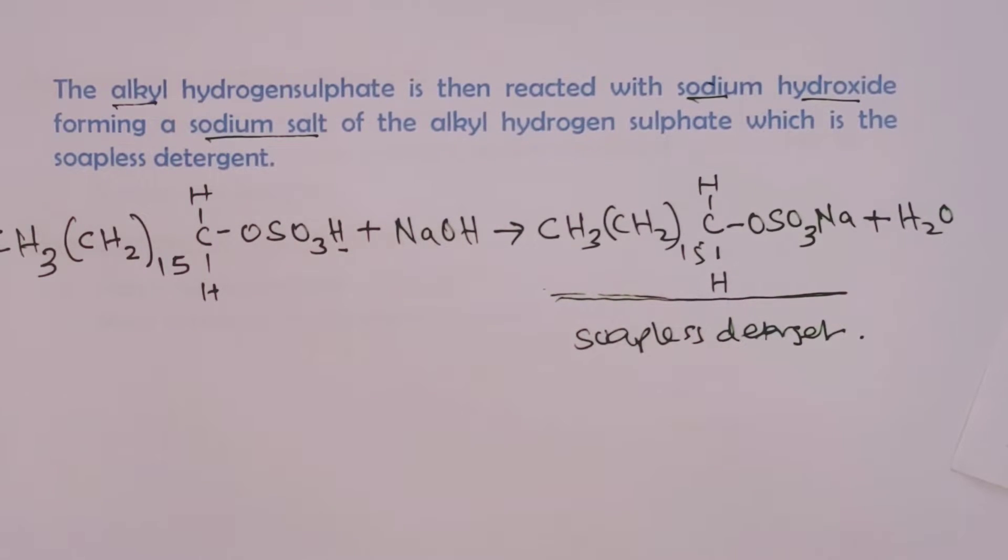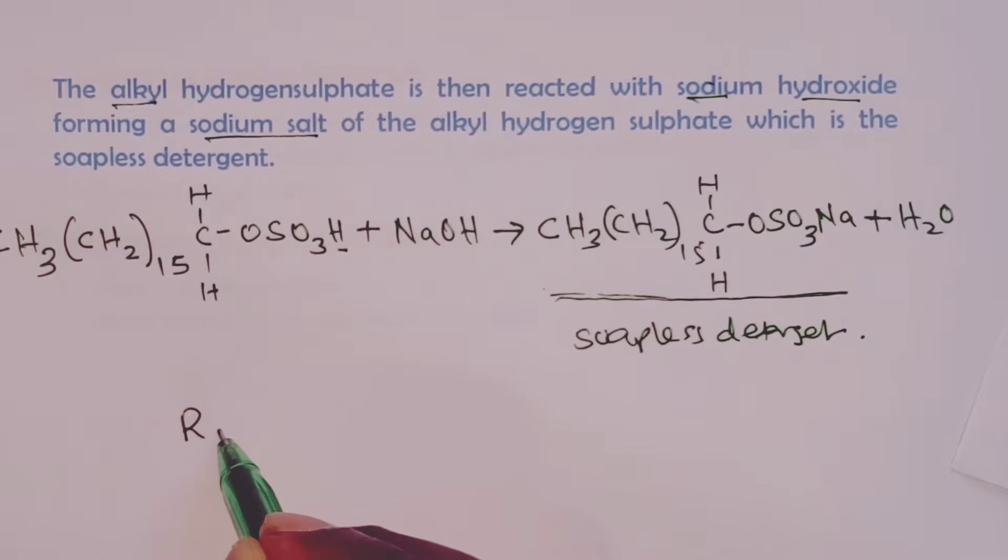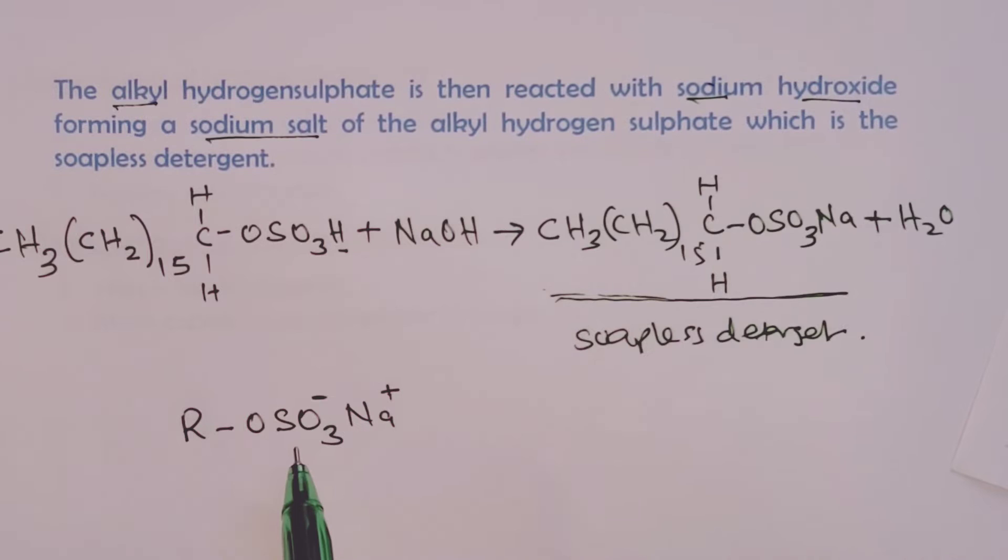Now, this soapless detergent can simply be represented by R, then OSO3Na. Of course, we have a minus on that and a plus on the sodium. This becomes the representation of a soapless detergent.